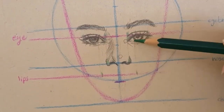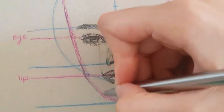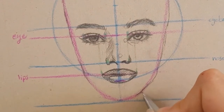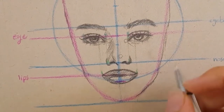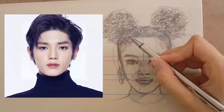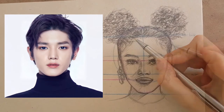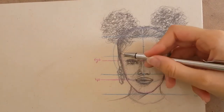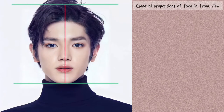Today's lesson is so basic but so important. First I'm going to find the average measurements of a face by studying this photo, and after that I'll show you how to sketch a face with this information. I define the height of the head with a vertical line which divides the face into symmetrical parts.